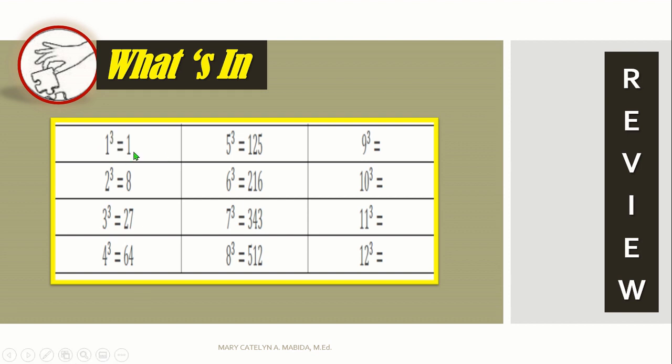One cube is equal to one. How did we get that? You could simply multiply one three times, so one times one times one is equal to one. Two cube is equal to eight. Again, two times two times two is equal to eight. Three cube is equal to 27, four cube is equal to 64, five cube is equal to 125, six cube is equal to 216, seven cube is equal to 343, eight cube is equal to 512.